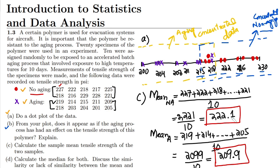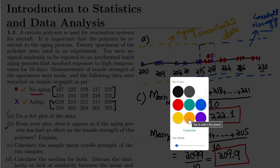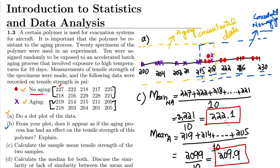So we have these two mean values for our data. We can see that there is a huge difference between them. If we plot them, for the no-aging process the mean value lies almost here on the higher end, while the mean of the aging data lies almost here on the lower end. The tensile strength of the no-aging data is higher compared to the aging data, and this is reflected by these mean values.